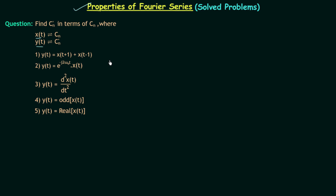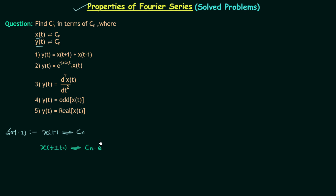To solve this problem we need to use two properties: the time shifting property and the linearity property. We know from the time shifting property that x(t ± t₀) will have the coefficient cn multiplied by e^(±jnω₀t₀).